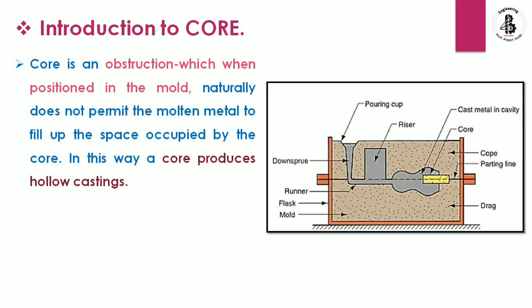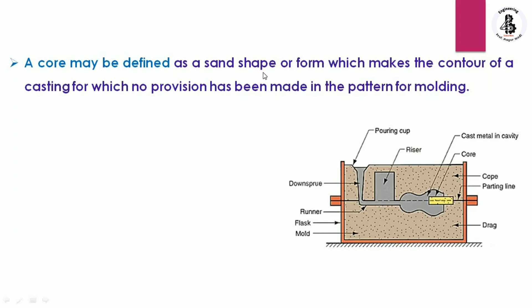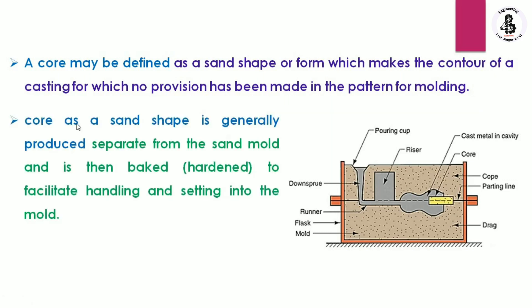To make a hollow cast product, cores are required to create recesses, undercuts, and interior cavities that are often part of a casting. A core may be defined as a sand shape or form which makes the contour of a casting for which no provision has been made in the pattern for making a mold. A core is generally produced separately from the sand mold and is then baked or hardened to facilitate handling and setting into the mold.